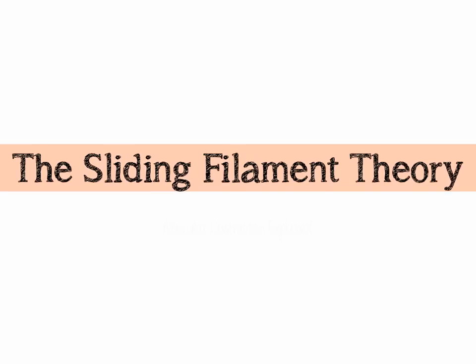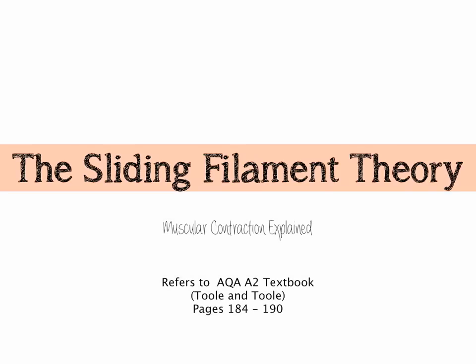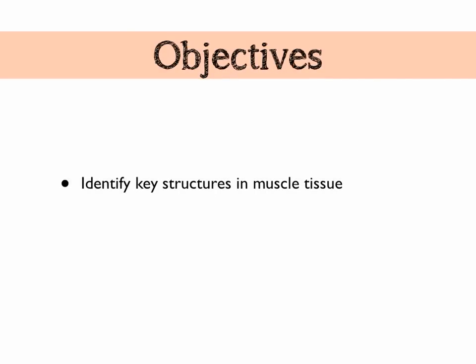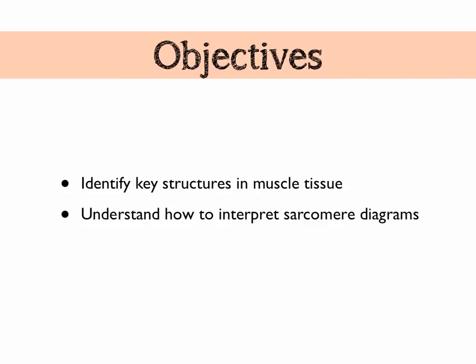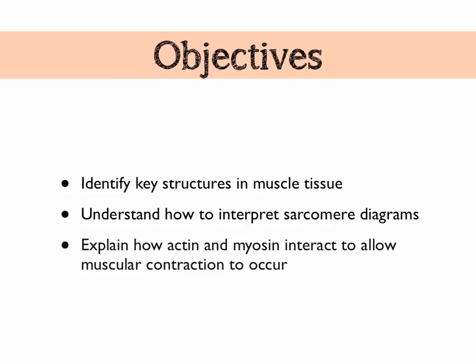In this video we're going to look at the sliding filament theory of muscular contraction. If you're following this in your AQA A2 textbook by Toole and Toole, you want to be looking at pages 184 to 190. Here are our objectives: we're going to look at key structures in muscle tissue, understand how to interpret sarcomere diagrams, and explain how actin and myosin interact to allow muscular contraction to occur.